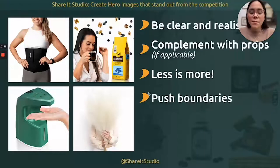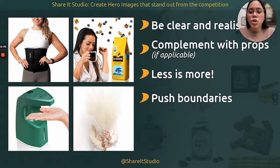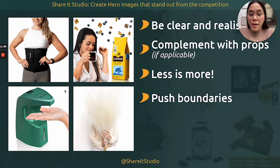Having a model or props on an image can be against Amazon guidelines. But at Shared Studio, we highly encourage our clients to push the boundaries. These images on screen are beautiful but might not fully align with Amazon guidelines — we have a model showing a waistband, a model drinking the coffee we're selling, a hand using the soap dispenser, and a set of faux pampas. Pushing the boundaries can be a great differentiating factor from your competitors, but you have to identify when to push them and when to stay inside Amazon's guidelines.